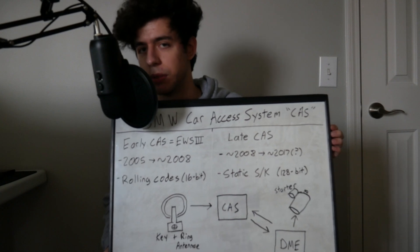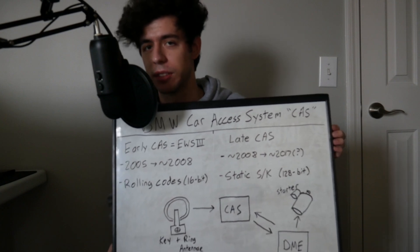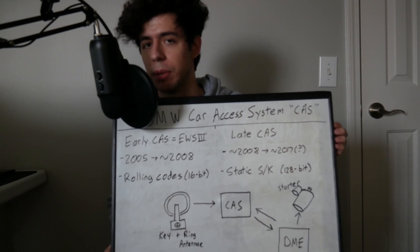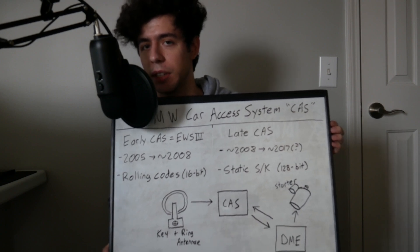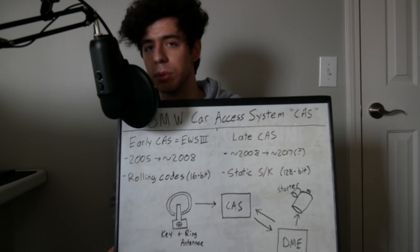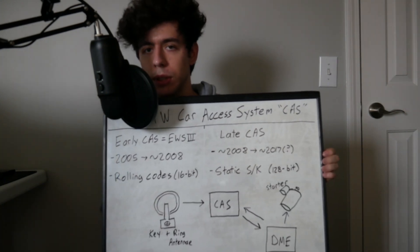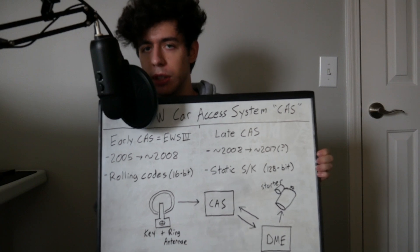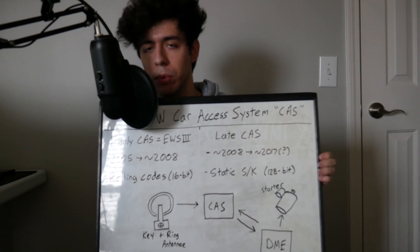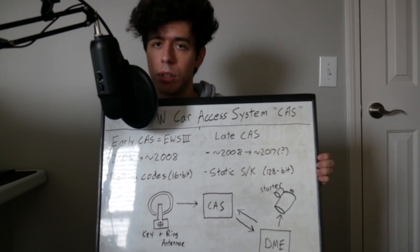Somehow in their infinite wisdom, BMW managed to design the early CAS system to be essentially the same thing as EWS3, yet somehow also make it so much less reliable. So at this point we've learned that early CAS modules function almost identically to EWS3 and that they have a rolling table of values that gets checked every time you turn the car on.